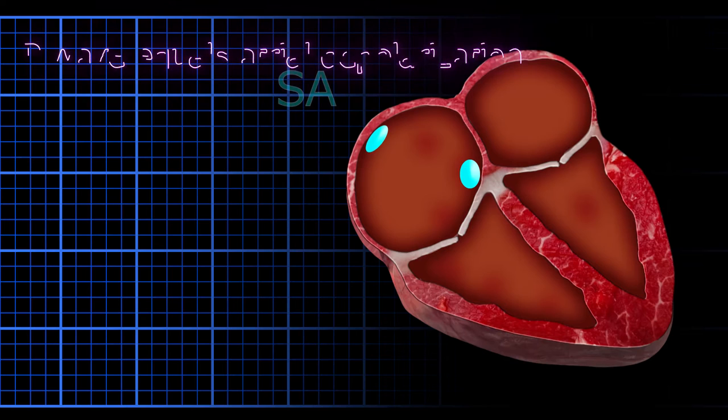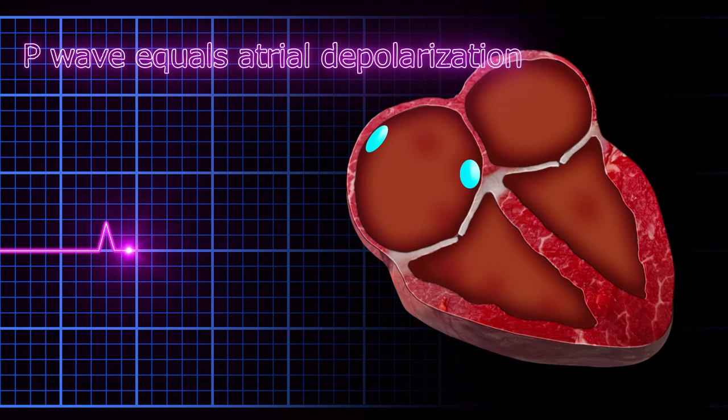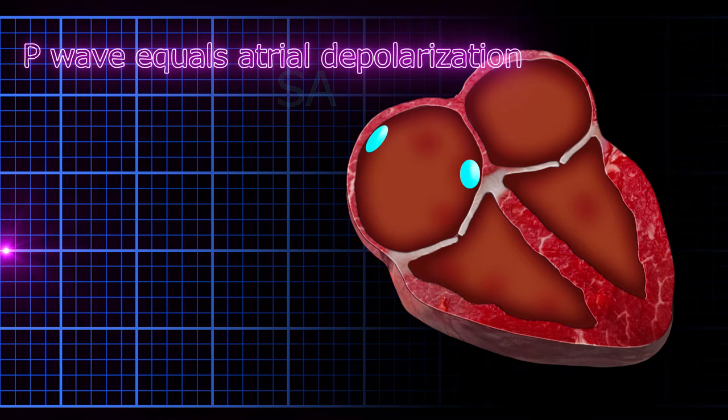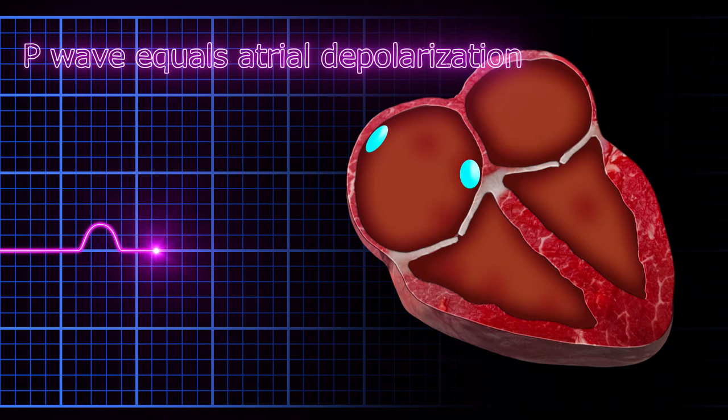Let me explain. If the SA node directly stimulated the AV node, it would be a short distance, but that's not what happens. The SA node spreads current outward and across the atrial tissue, eventually getting back to the AV node, thus taking more time due to the path the current took.